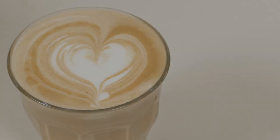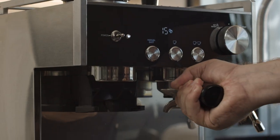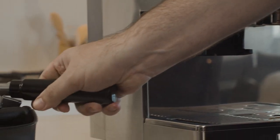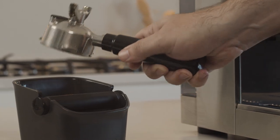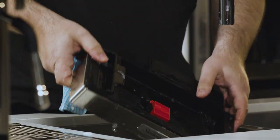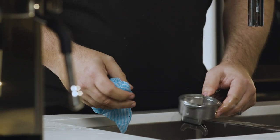You can now remove the group handle by turning it anti-clockwise from the group head and dispose of the used coffee left in the group handle. And lastly, wash all the parts with warm water.